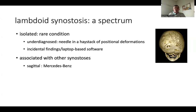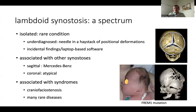You can have lambdoid synostosis associated with other synostoses, like in this case of Mercedes-Benz syndrome, named for obvious reasons — I have no conflict of interest. It can be associated with a coronal synostosis, which gives a very atypical plagiocephaly both anterior and posterior, and it can be associated with multiple synostoses, very often in complex syndromes, and can have very severe consequences, like in this newborn who needed to be operated on day 9 of life with good results.